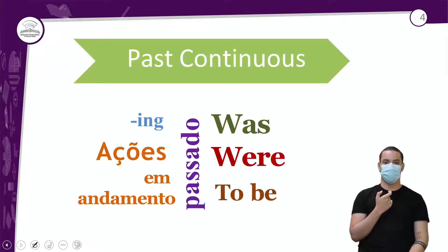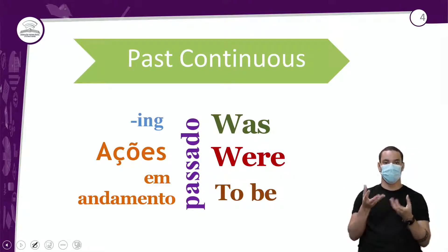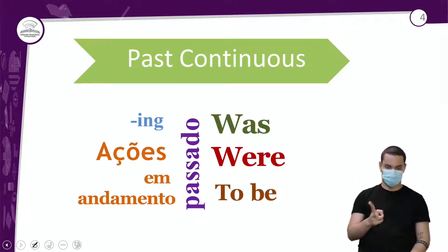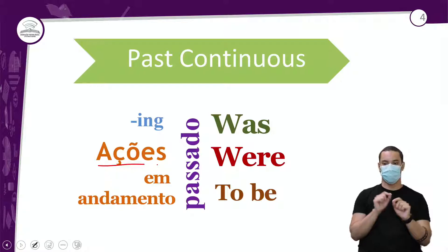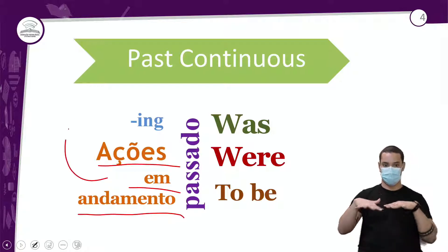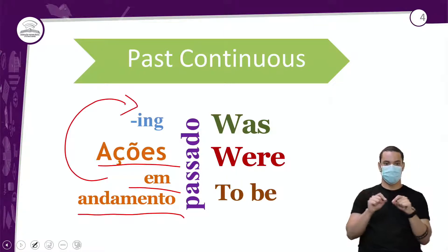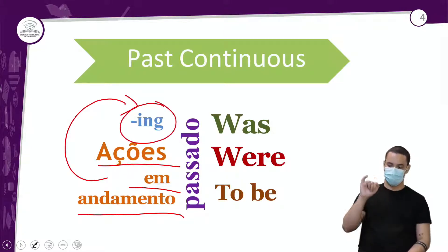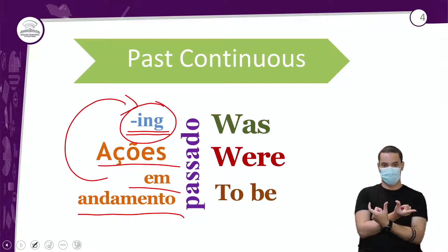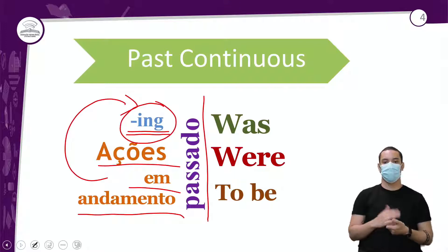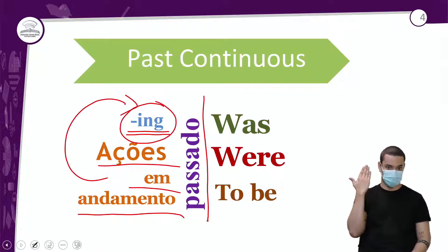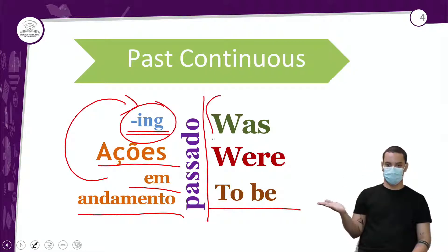Uma foto geral do que é o past continuous, o passado contínuo: você tem ações em andamento, representadas por esse sufixo -ing, que nós chamamos em inglês de ING. Passado — e o passado que você vai usar é o to be.